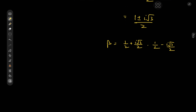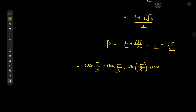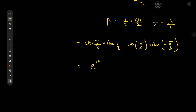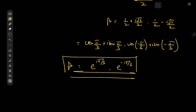It's nicer to write this in polar form. One half is the cosine of pi over three, and root three over two is the sine of pi over three. So we have cosine of pi over three plus i times the sine of pi over three, which is e to the i pi over three. And the other root gives cosine of negative pi over three plus i times the sine of negative pi over three, which is e to the negative i pi over three. So these are our two possible values for the beta parameter.